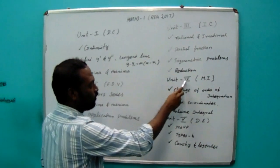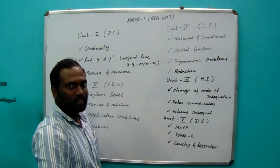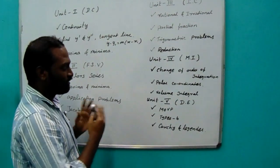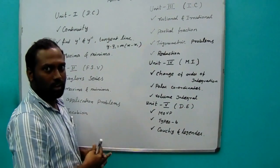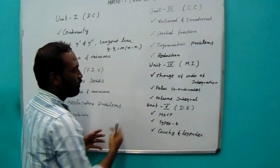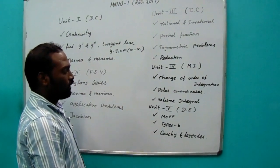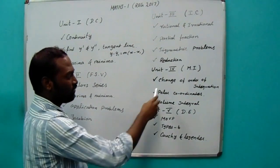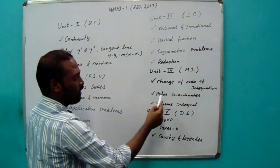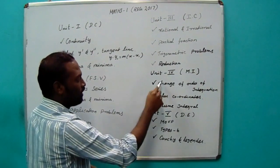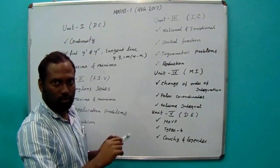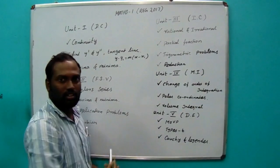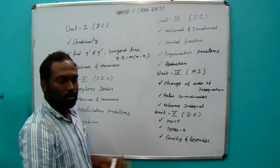Unit 4 is the most difficult thing to understand — but actually Unit 4 is very easy. One of the topics has particular problems. Important problems: change of order of integration and polar coordinates. Most of the questions are combined — change of order of integration and polar coordinates. You get the 16-mark questions.